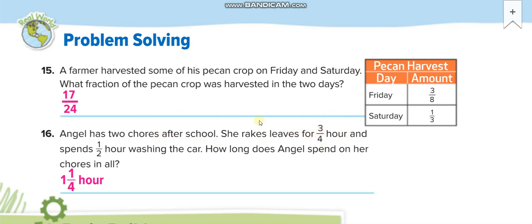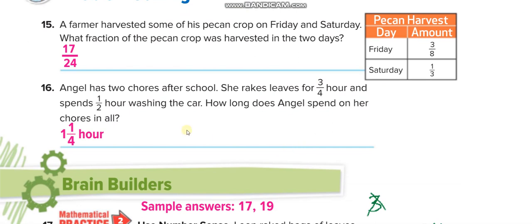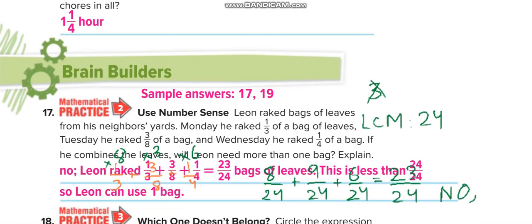Angel has two chores after school: she rakes leaves for three-quarters of an hour and spends half an hour washing the car. How long does Angel spend on her chores? You have to add them, make the denominator the same, and add them. You will get an improper fraction — where the numerator is bigger than the denominator — and you will convert it into a mixed number. If you forgot how, watch the video for that lesson on my channel.